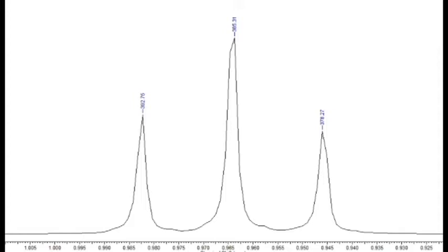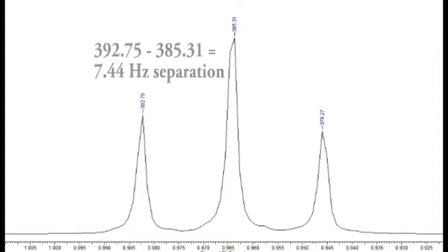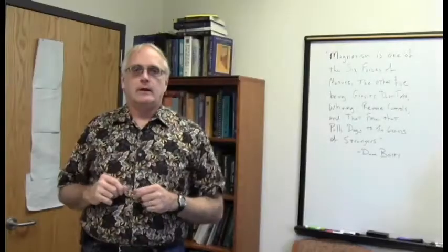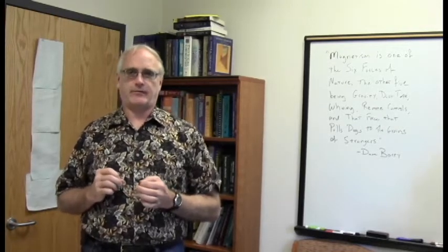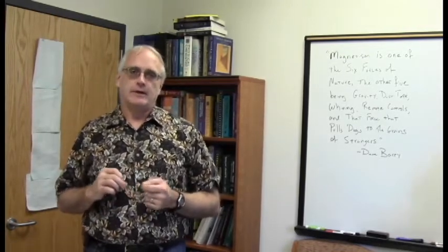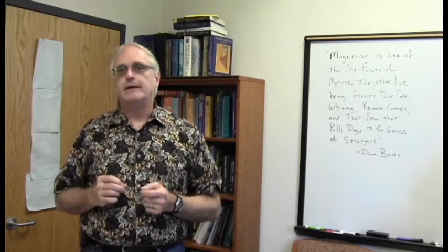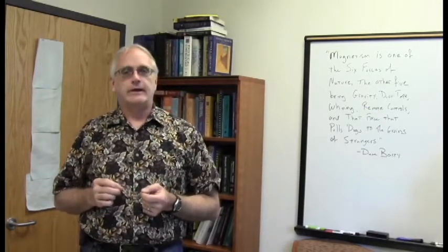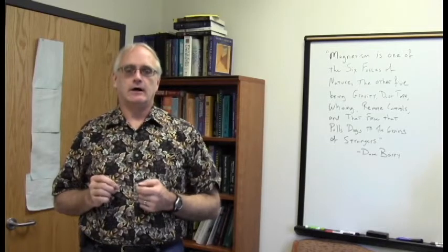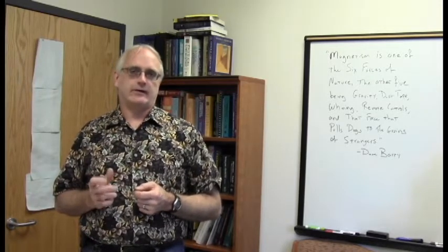I did that because I want you to see that these peaks, with this very lovely baseline resolution, are separated from each other by around 7.5 hertz — the distance between these two adjacent peaks and these two over here as well. You have to understand just how marvelous it is that the instrument can pick up these kinds of differences. Our instrument operates at a frequency for protons of 400 megahertz, and these two peaks are separated by only 7.5 hertz.